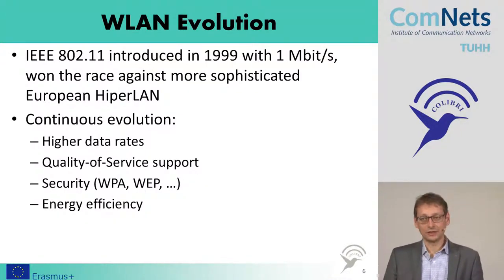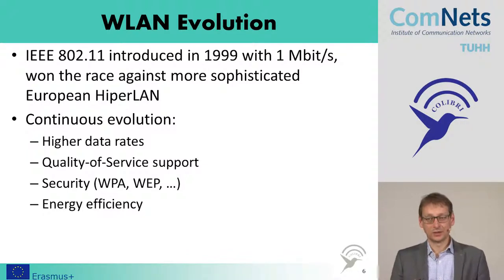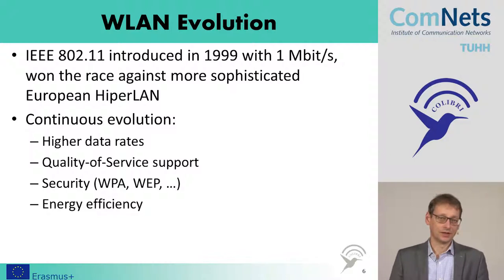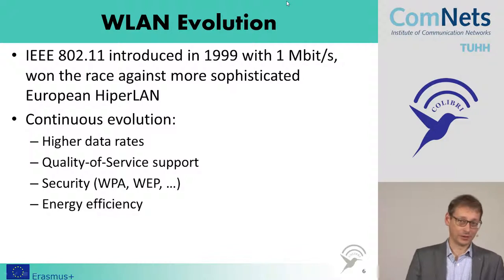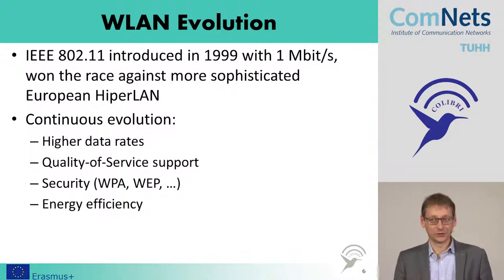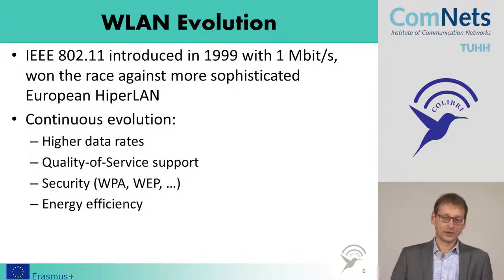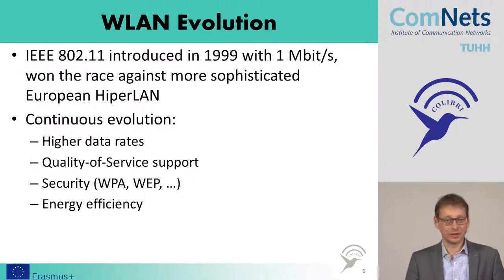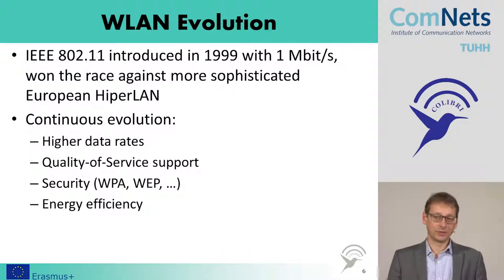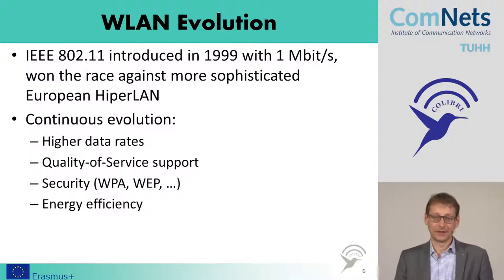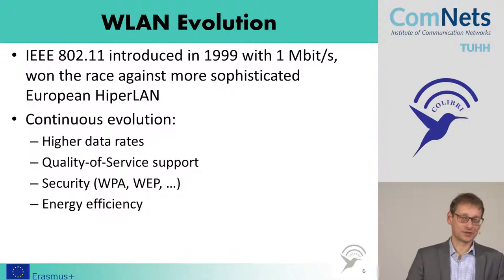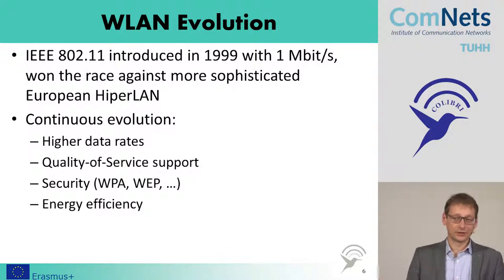Thinking about the wireless LAN evolution: the first systems were introduced in 1997, and the first compatible version came in 1999 offering one to two megabit services. IEEE 802.11 won the race against the more sophisticated European system called HiperLAN. Constantly over the years, wireless LAN evolved from one megabit, to 11 megabit with 802.11b, to 54 megabits with 802.11g, to 100 megabit with 802.11n, and now 802.11ac is coming up to one gigabit per second. We are also increasing quality of service, security, and energy efficiency.